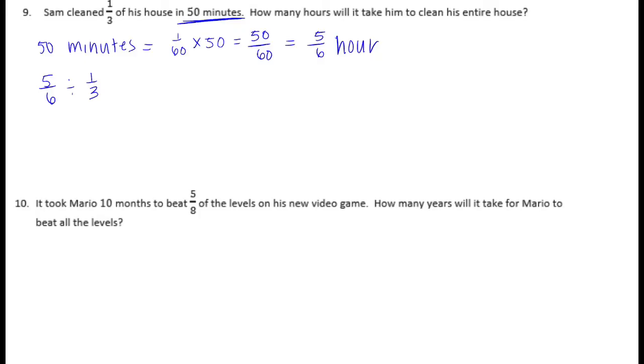And we're going to take that 5 sixths and divide it by the 1 third, because he cleaned 1 third of his house in 5 sixths of an hour. So if we want to take this, I'm going to find a common denominator for 6 and 3. It would be 6. So 1 third would be equal to 2 sixths. So we have 5 sixths divided by 2 sixths, or 5 divided by 2, which is 5 halves, or 2 and a half. So it would take him 2 and a half hours to clean his entire house.